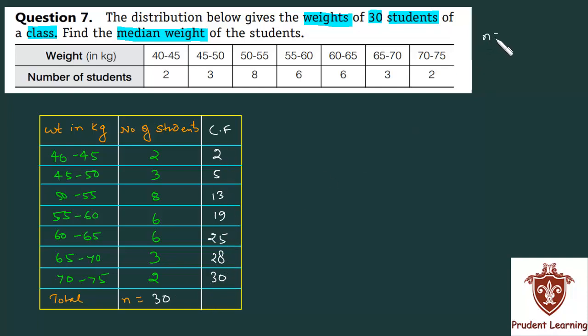Since n is 30, n by 2 is 15. Where is 15? This is 19, so this is your median class.